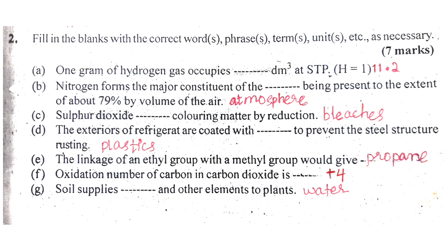Number E: The linkage of an ethyl group with a methyl group would give propane. If you link a methyl group with a methyl group it would also give propane.